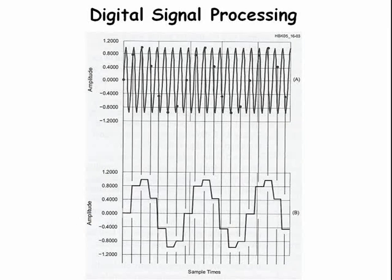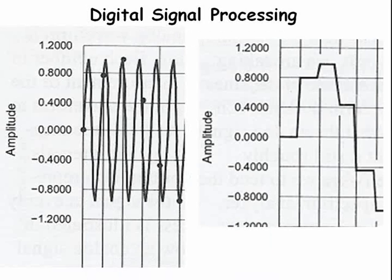If the sampling frequency is less than that of the sine wave being sampled, the result is an output that retains the general shape of the input but at a lower frequency — this is called aliasing. This leads us to the Nyquist sampling theorem: the sampling frequency F_s must be at least twice the frequency of the input signal to avoid aliasing.